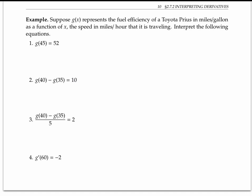Let's look at another example. Please pause the video and try this one for yourself. Here, g of x represents the fuel efficiency of a Toyota Prius in miles per gallon as a function of x, the speed in miles per hour that it is traveling.